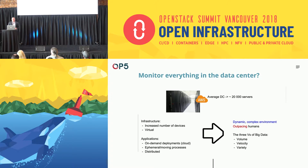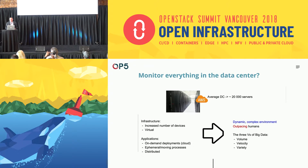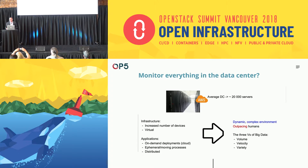When we think about monitoring and start looking at the average data center — for example, an AWS data center has approximately 20,000 servers — and when you think about the increased number of devices and the on-demand deployments for cloud, the ephemeral moving processes and distributed environments, all of a sudden traditional monitoring just doesn't work anymore. When you have to configure the environment for a dynamic environment, humans can't keep up.